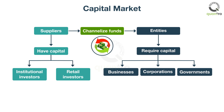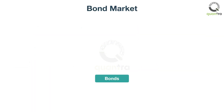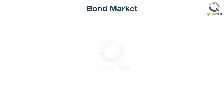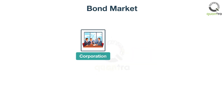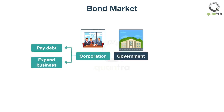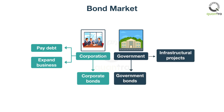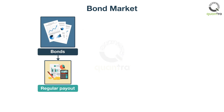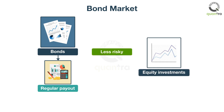The two main components of capital markets are bond markets and equity markets. The bond market, often called the debt market, is a market where debt instruments such as bonds are traded. Corporations generally issue bonds in order to raise capital, to pay down debt, and expand business operations. Similarly, governments issue bonds to raise capital to fund infrastructural projects. Corporate bonds, government bonds, municipal bonds, and so on are examples of bonds that these entities issue. Usually, these bonds have regular payouts to investors, hence investments in debt securities typically involve less risk than equity investments.